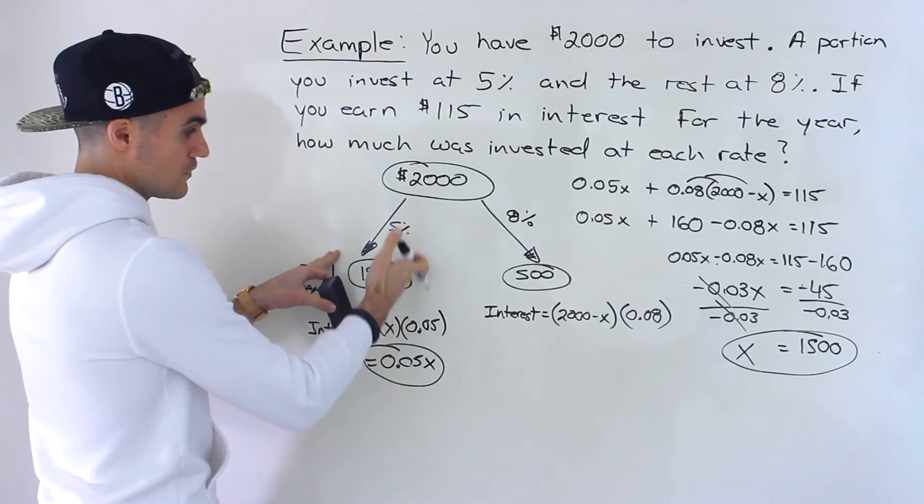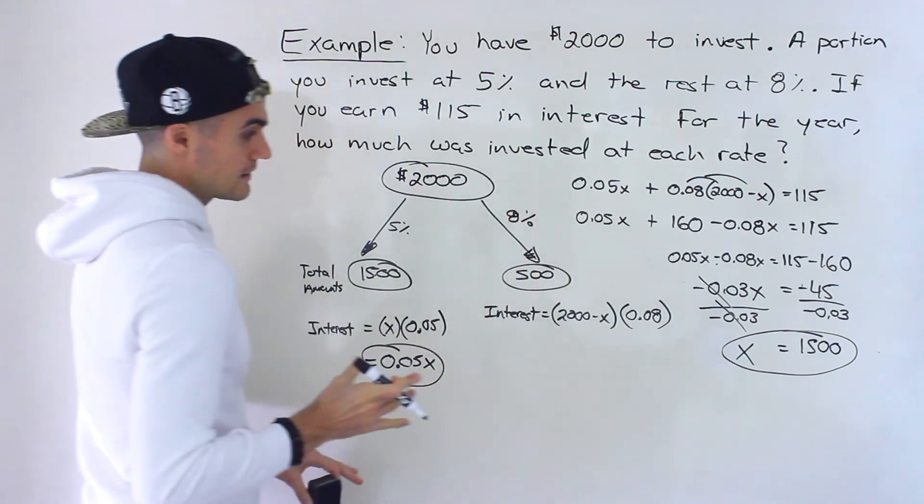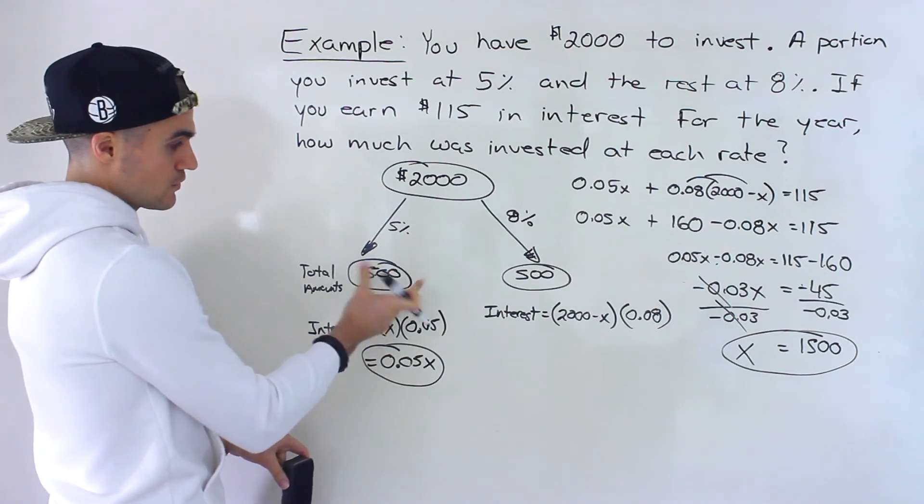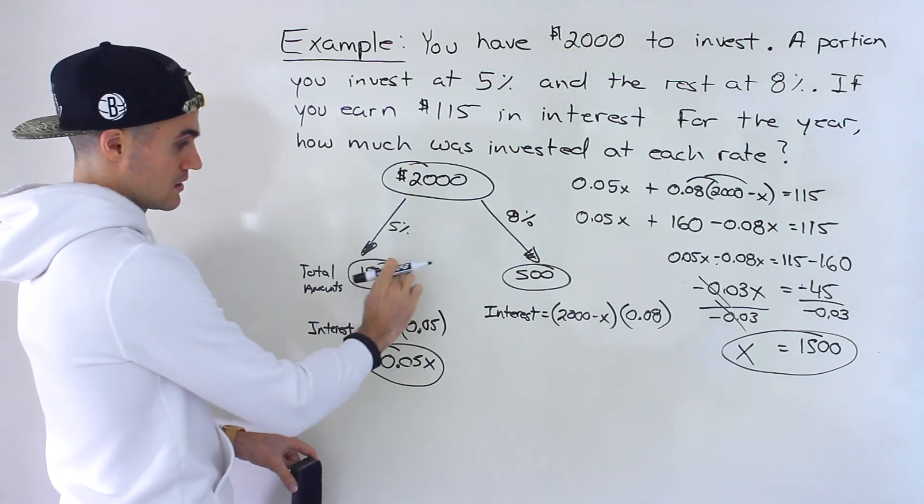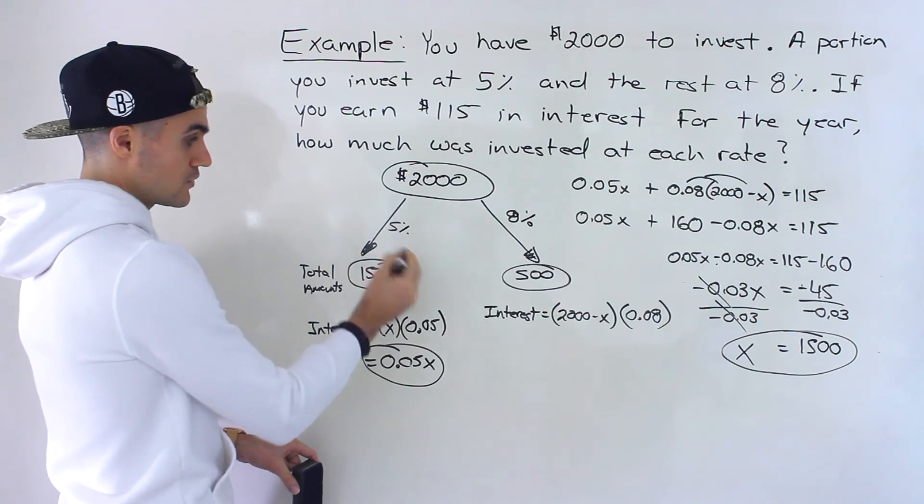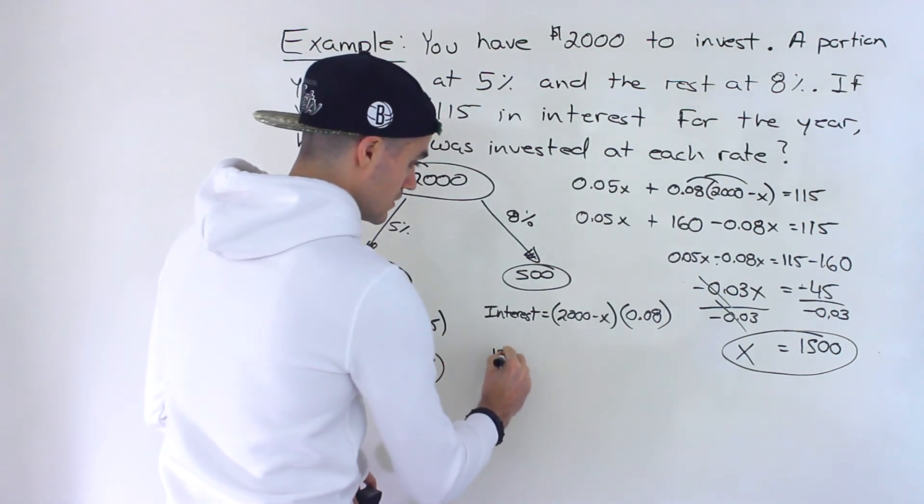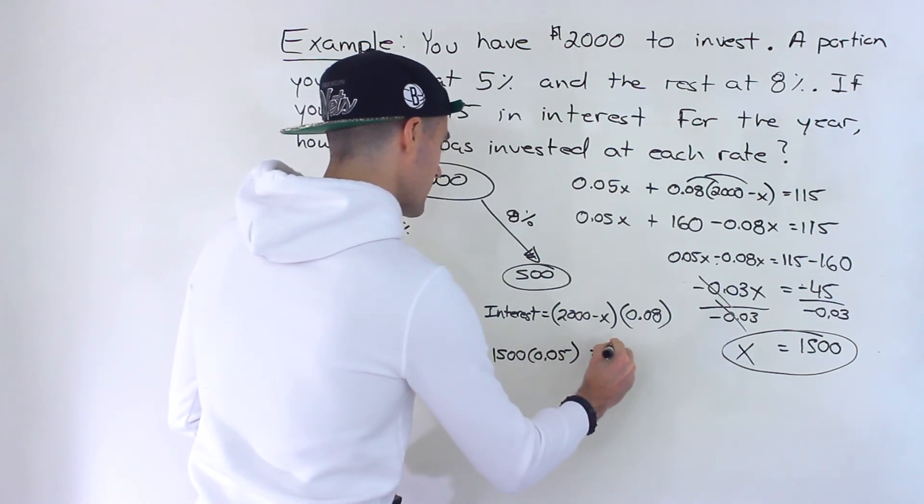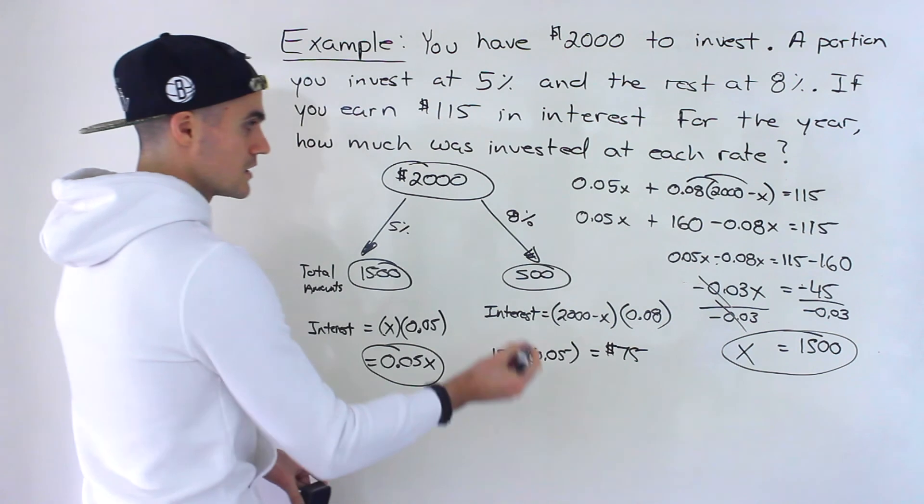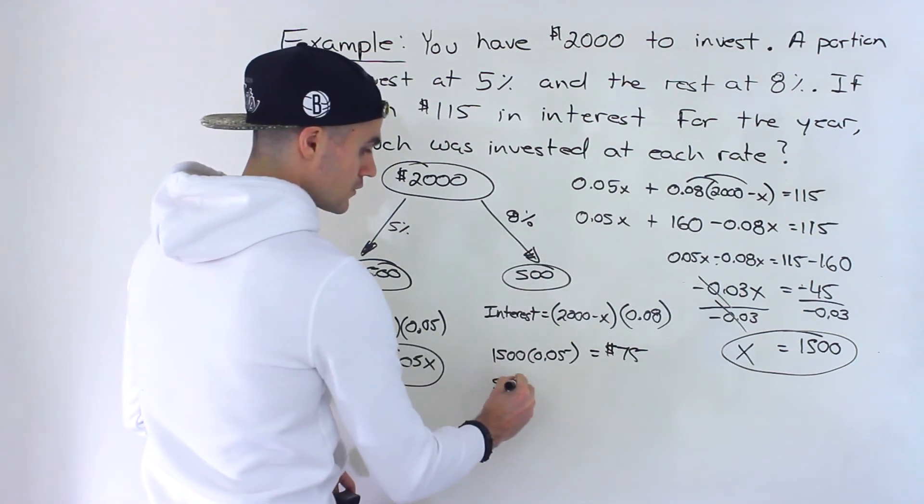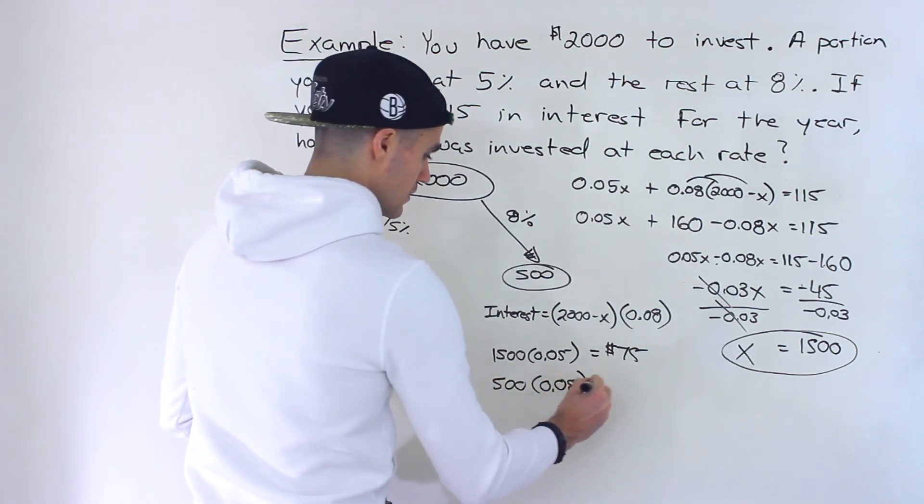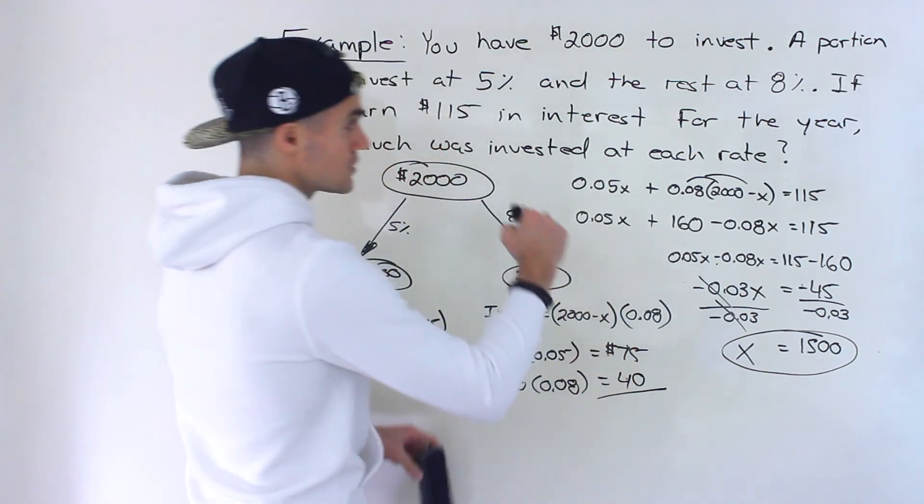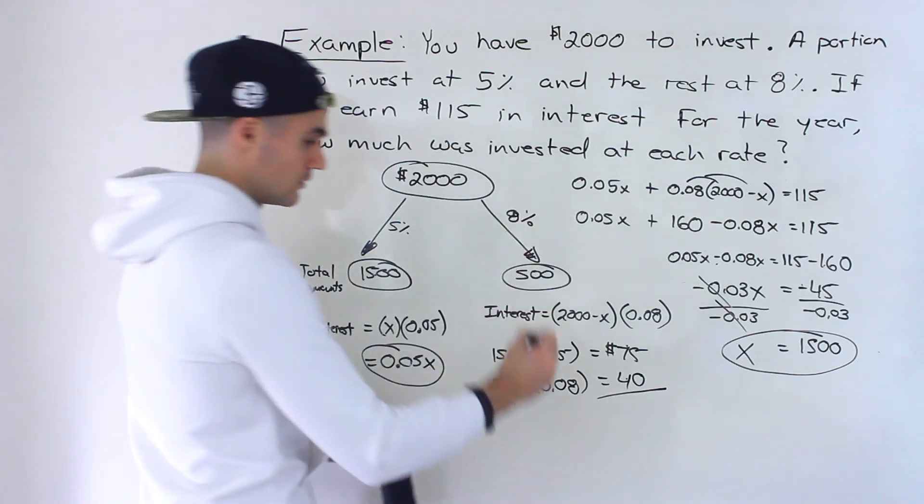So you invest 1,500 at 5%, $500 at 8%. If you want to check your answer, well, notice we can find out the interest earned here. 1,500 times 0.05 would give us $75. And then 500 at 8% would give us $40. And what happens when we add them up? Notice we get that total of 115.